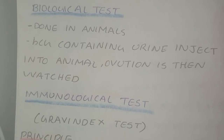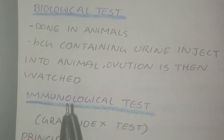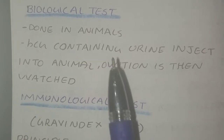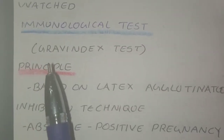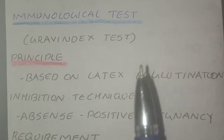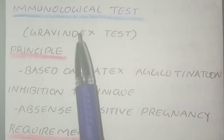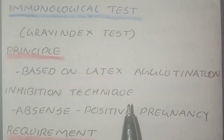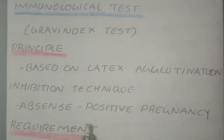The biological test is usually done in animals — the HCG-containing urine is injected into the animal and ovulation is then watched. It now has only historical importance. For the immunological test, also known as the Gravindex test, the principle is based on the latex agglutination inhibition technique.